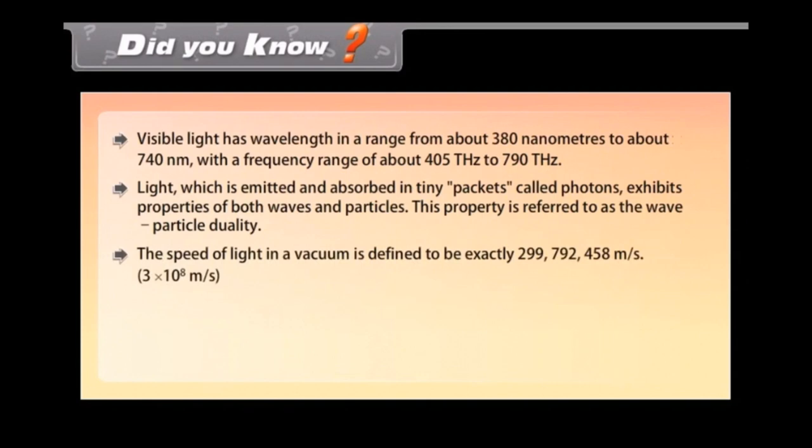The speed of light in a vacuum is defined to be exactly 29 crores 97 lakhs 92 thousand 458 meters per second, that is 3 × 10^8 meters per second.